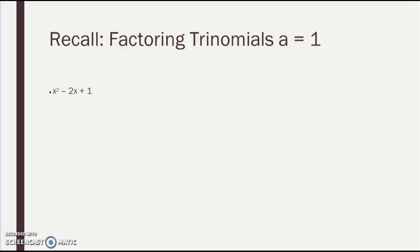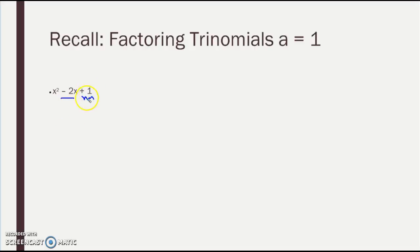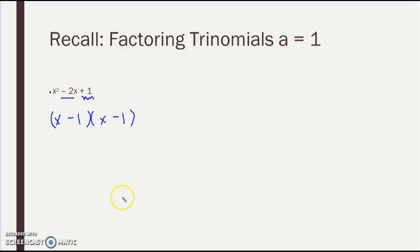If we think back to trinomials where A is 1, that A is that initial one right in front of the X squared. Whenever that's 1, all we have to do is find numbers that multiply to C and add to B. So in this case, I've got negative 1 and negative 1 which will give me negative 2. All I have to do is two parentheses, both with an X, and put negative 1 and negative 1. Pretty easy, pretty straightforward.